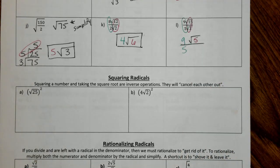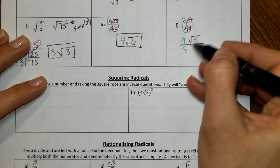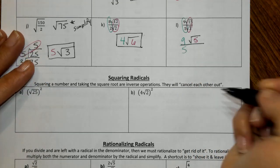This is how you leave your answer. 9 square root of 5 over 5. Nothing can be simplified. These cannot be simplified because one is a whole number and one is a radical.